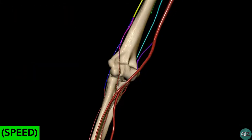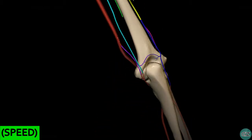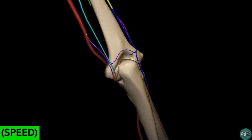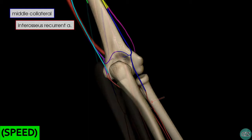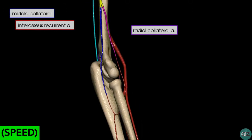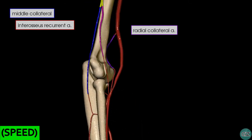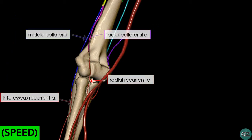I've zoomed in a little bit, and rotating the model to give a posterior view of the elbow, you can see how these collateral arteries anastomose around the elbow joint to form a rich anastomotic network. Looking at the middle collateral artery in blue, you can see how it descends to anastomose with a branch of the posterior interosseous artery known as the interosseous recurrent artery. Rotating the model anteriorly, you can see how the radial collateral artery winds round to anastomose with the radial recurrent artery — a recurrent artery being one that reflects back in the opposite direction of its parent artery after its origin.